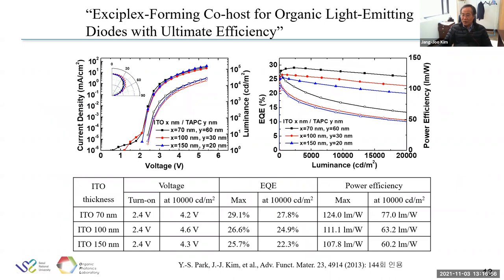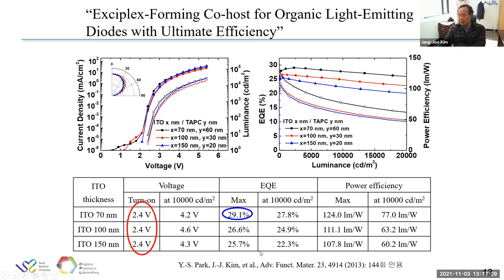We fabricated the device and found the turn-on voltage is 2.4 volts — the same as the photon energy for green emission — which is essentially the minimum achievable in an OLED. EQE is 29.1%, almost the same as the theoretical limit. Power efficiency is also quite high, and the low turn-on voltage combined with high EQE results in high power efficiencies.